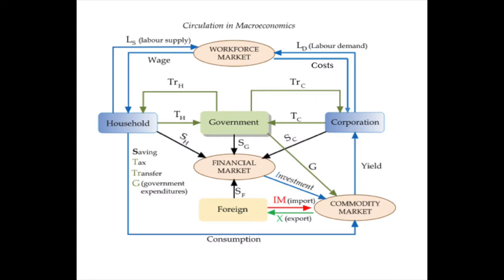What this model is still missing are the banks and those in the financial industries who engage in creating more money through credit creation and additional forms of money through other means. In other words, the money supply here is assumed to be fixed. For now, let's assume that banks and the financial industry only engage in intermediation by moving savings from households and businesses to investors in the economy.